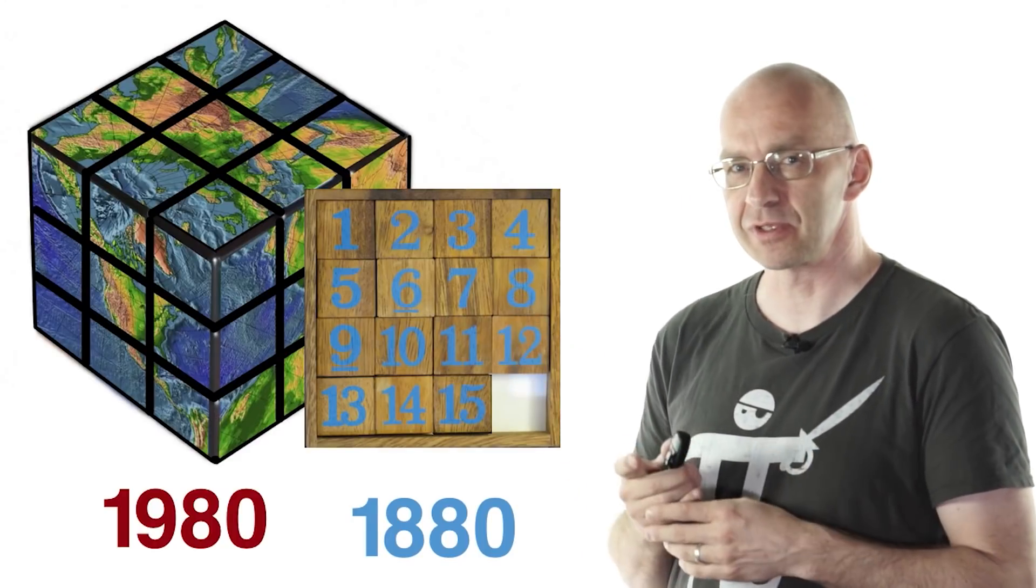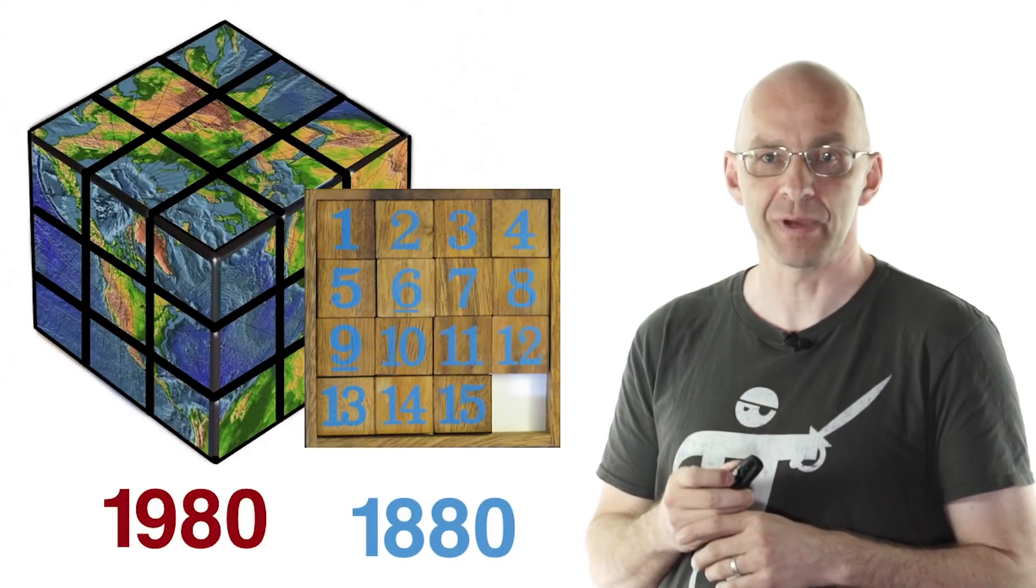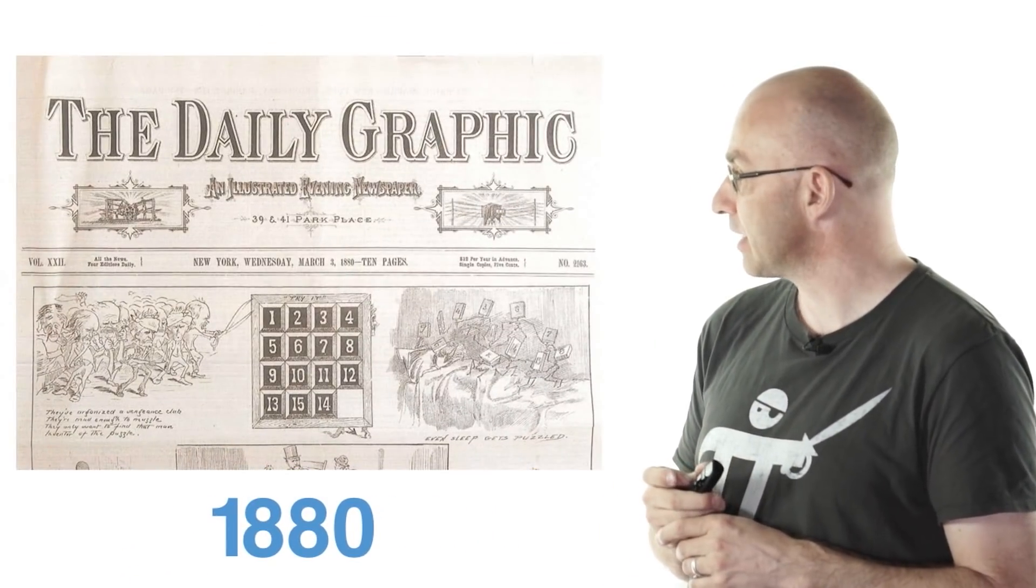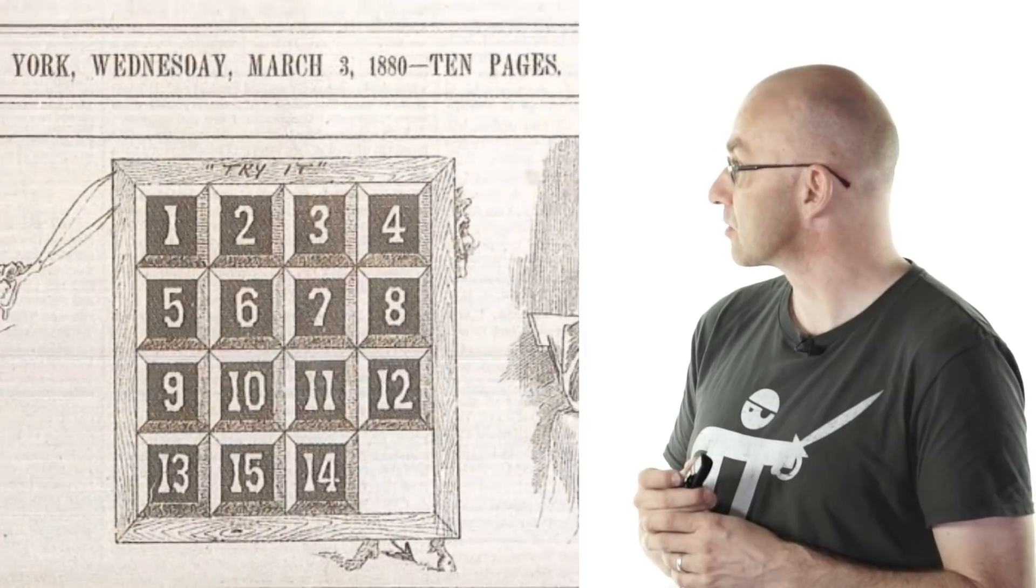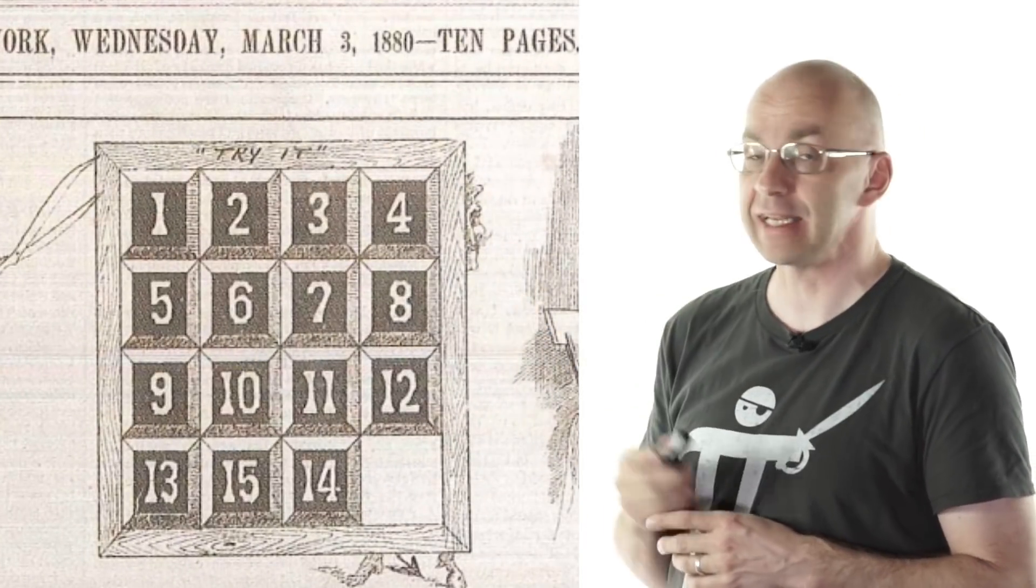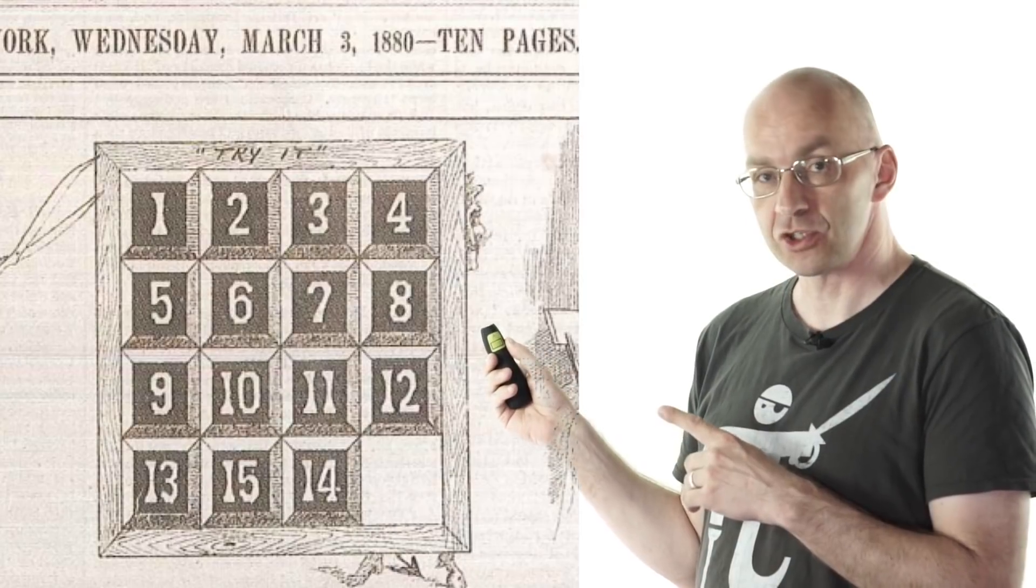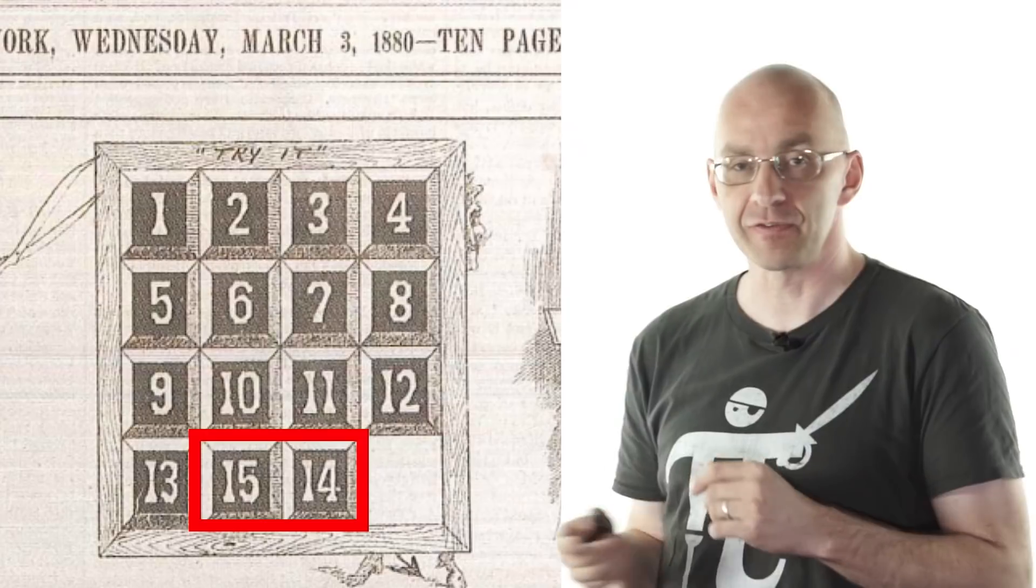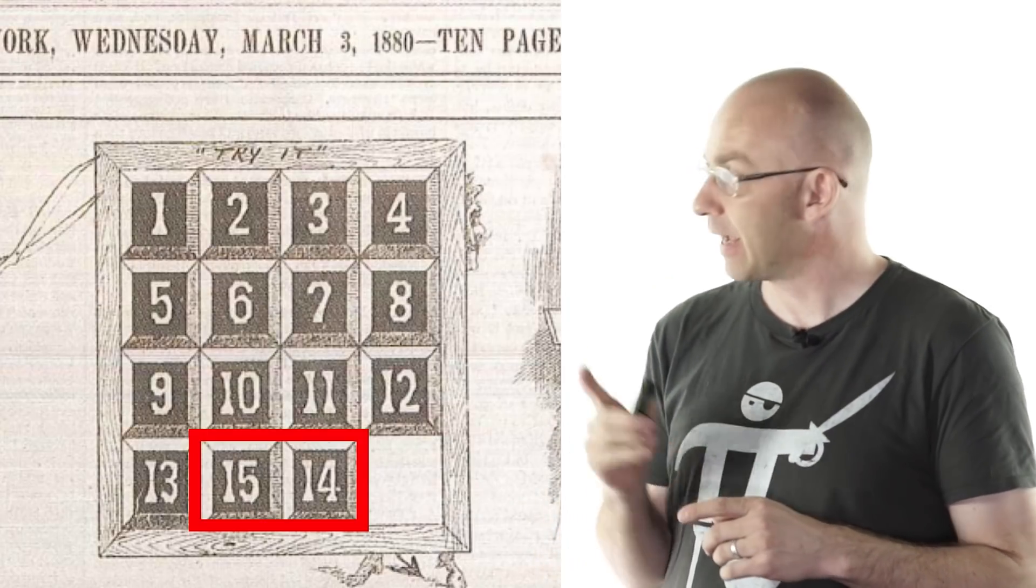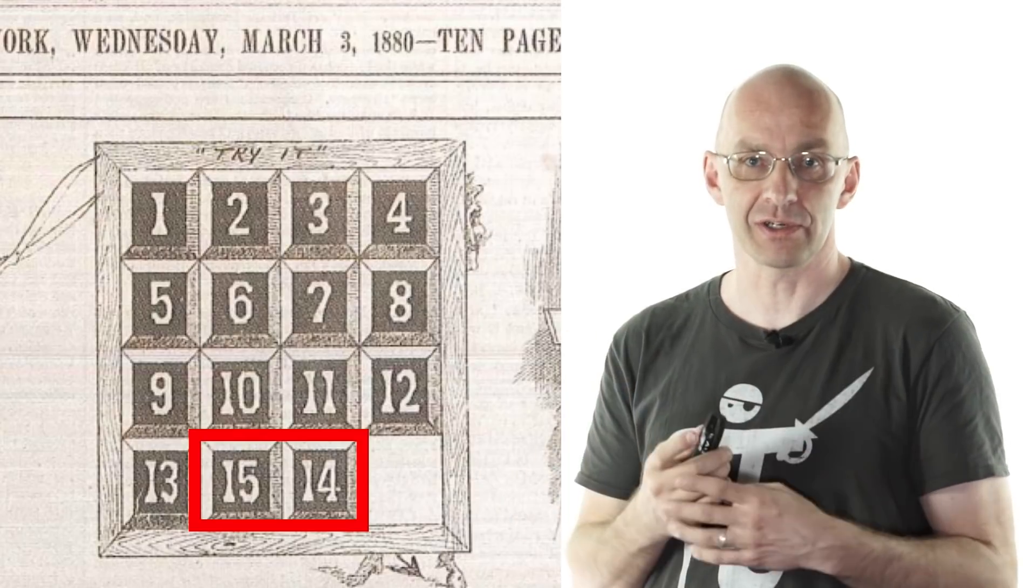What was so difficult about this one? Let's look at a newspaper from the time. Here center stage is the 15 puzzle - that's what it's called. This was March 3rd, 1880. If you look closely, what's shown is actually a little bit different from what I showed before. The 14th and 15th are swapped over, and it's really this swap that caused the craze.